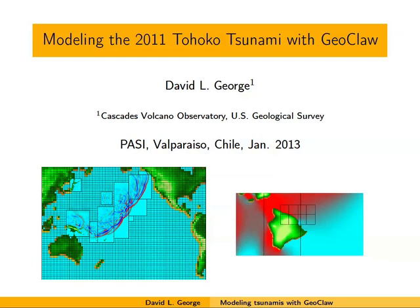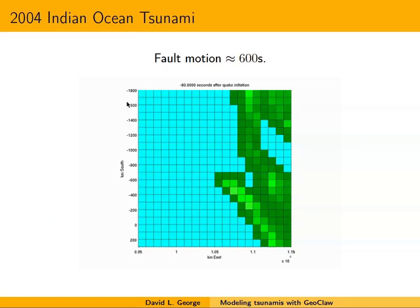Before getting to that, I'll show the simulations that didn't work in the last lecture because they're interesting. This is the Sumatra 2004 fault rupture—one of the longest ever known, lasting almost 10 minutes as it ruptured northward. The simulation uses a temporal-spatial model of the evolution of the seafloor: we literally lift up the bottom bathymetry in the model as the seafloor is rupturing, and that lifts up the water column.